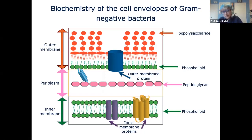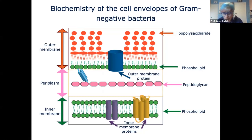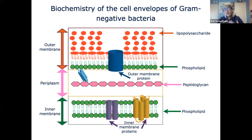The cell envelope of gram-negative bacteria is made up of three different compartments. The outermost compartment, which faces the outside world, is the outer membrane. This is a lipid bilayer as all biological membranes are. The outer leaflet of this outer membrane — the part that really does face the outside world — is composed of a molecule called lipopolysaccharide.